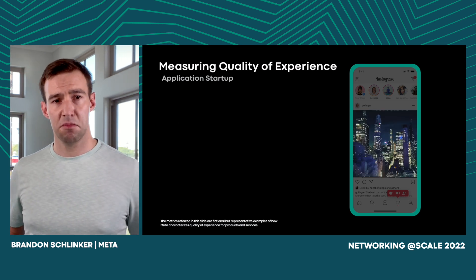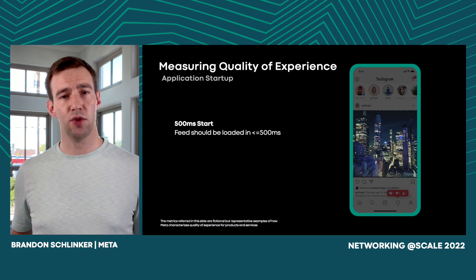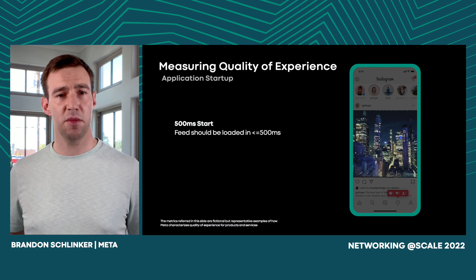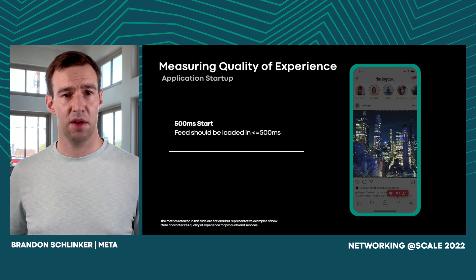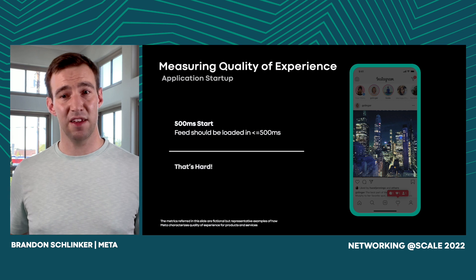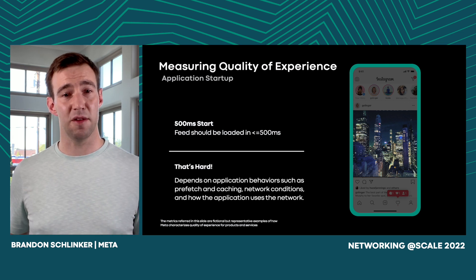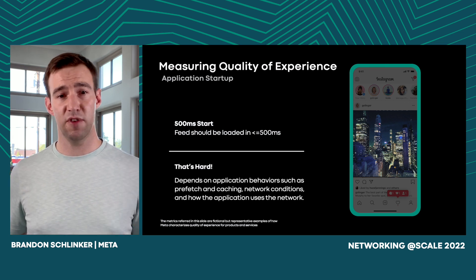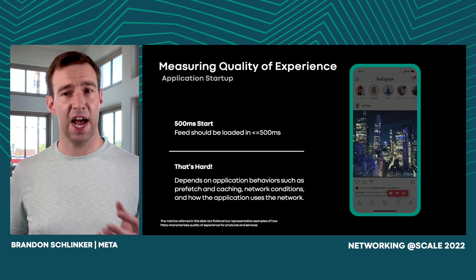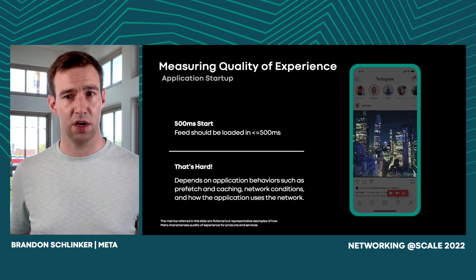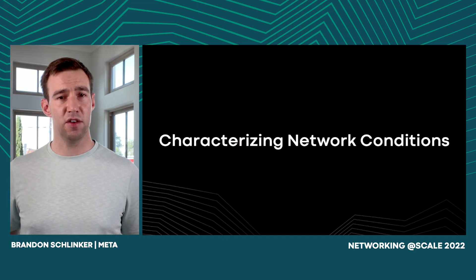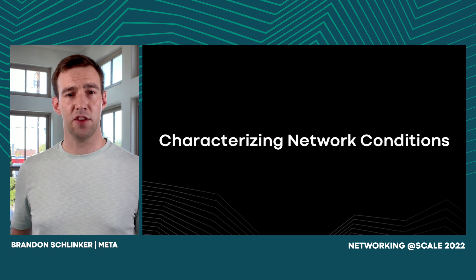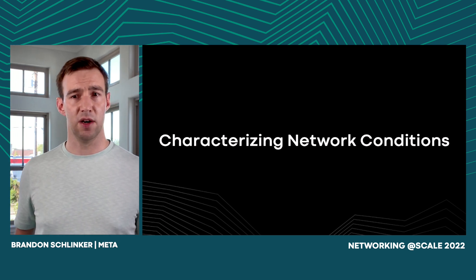Application startup is another example. Generally speaking, if you boot one of our applications such as Instagram, we want that application to start, be ready, and all the components in your feed to be loaded within 500 milliseconds. That's challenging because there are many different components that play a role here, including prefetch, caching, ABR, network conditions, and how the application uses the network. So now let's talk about characterizing network conditions.